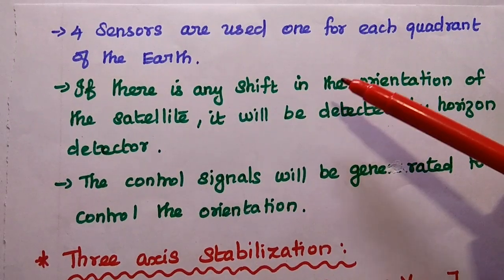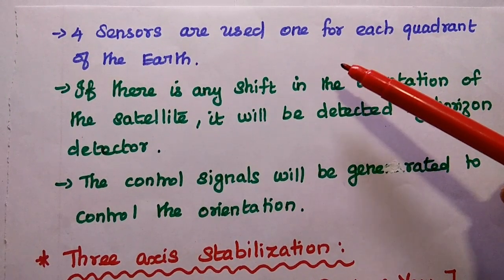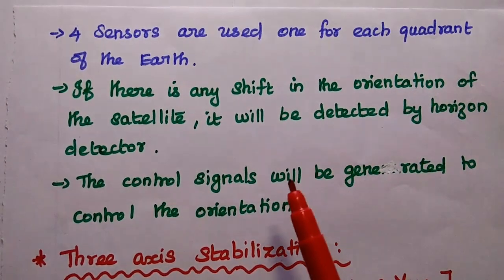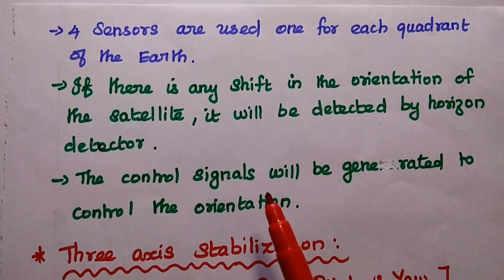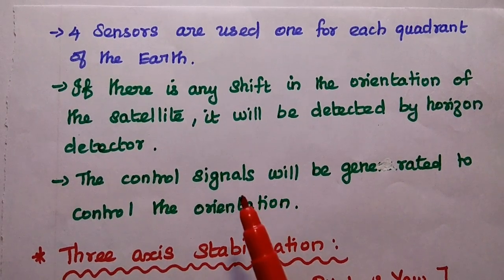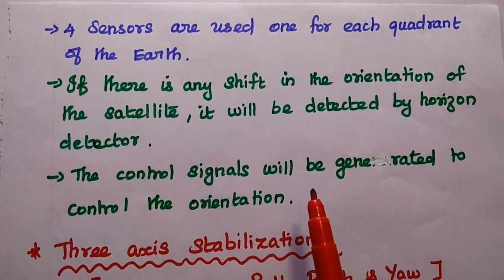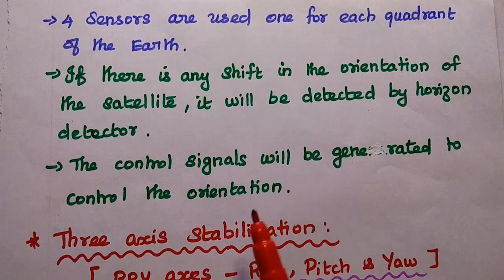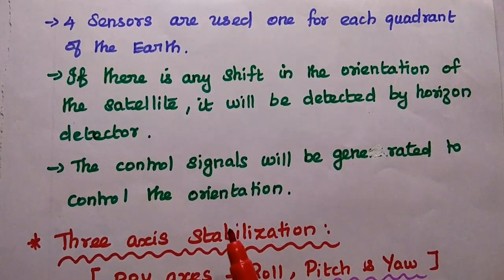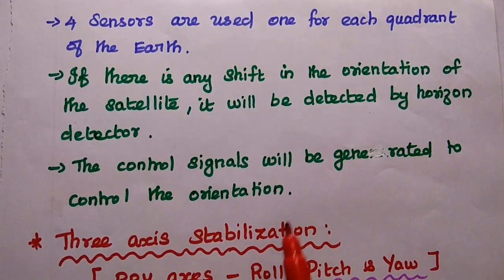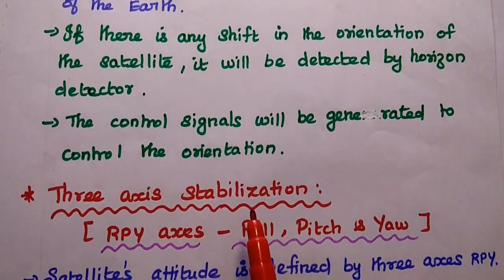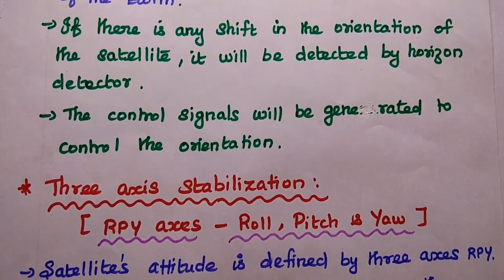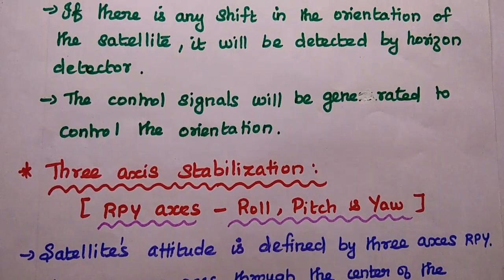As discussed, 4 sensors are used, one for each quadrant of the earth. If there is any shift in the orientation of the satellite — that is, an attitude change — it will be detected by one of the horizon detectors. Then control signals will be generated and sent to the attitude control subsystem in the satellite to correct the orientation.